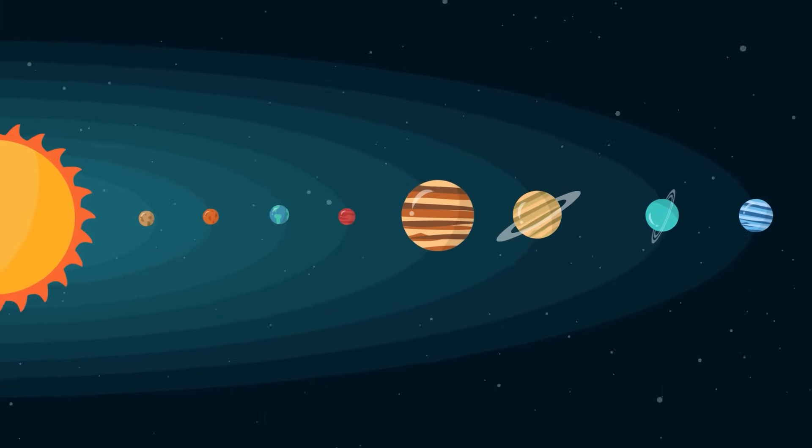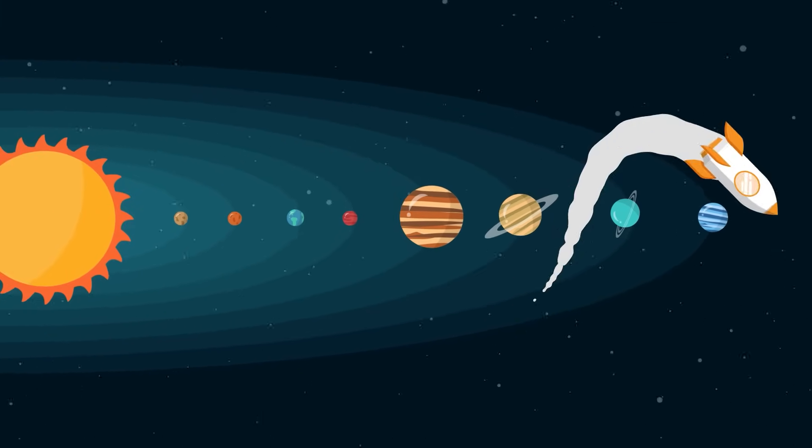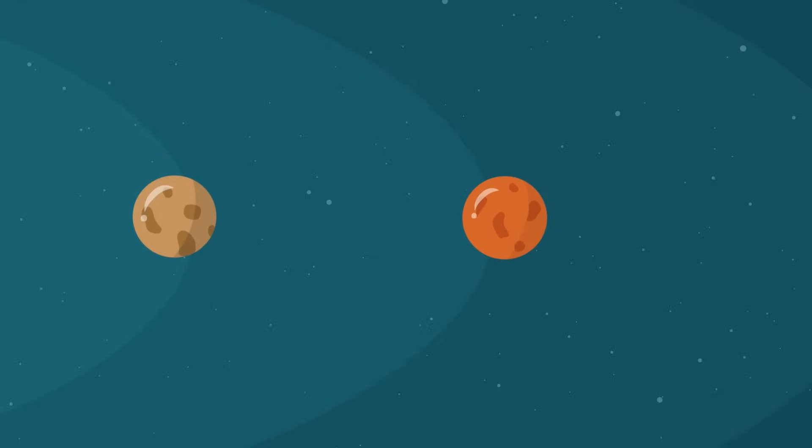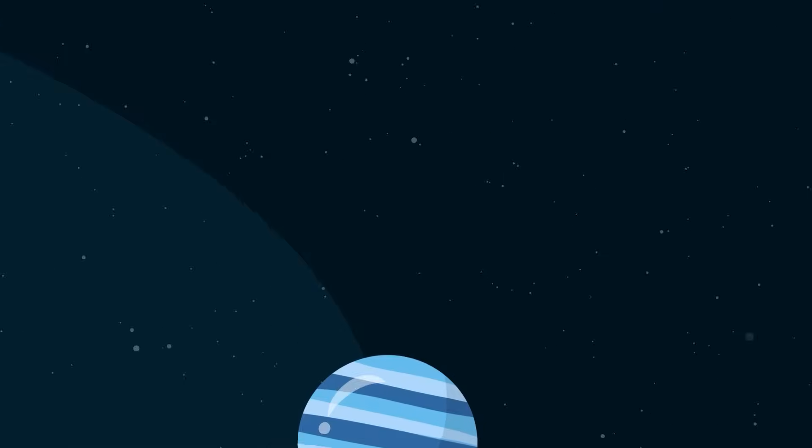Into the sky far away in the vast expanse, eight planets are spinning in the celestial dance: Mercury, Venus, Earth, and also Mars, Jupiter, Saturn, Uranus, Neptune, shining stars.